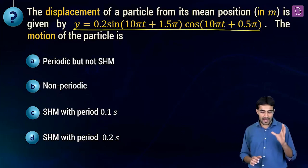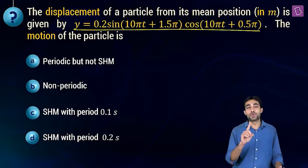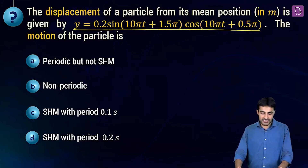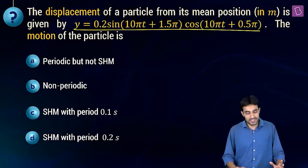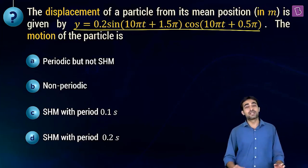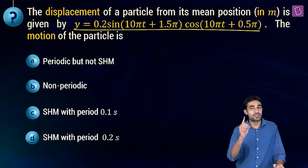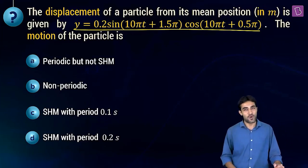Option A says the motion is periodic but not simple harmonic. Option B says it is non-periodic motion. Option C: simple harmonic motion with a period of 0.1 seconds, and option D: simple harmonic motion with a period of 0.2 seconds.